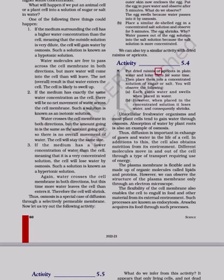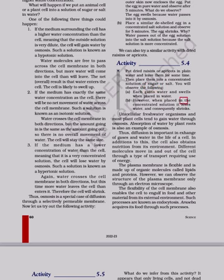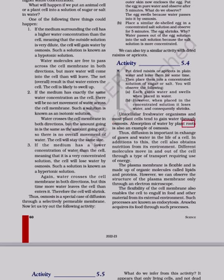Activity 5.4: Put dried raisins or apricots in plain water and leave them for some time, then place them into a concentrated solution of sugar or salt. Each gains water and swells when placed in water. However, when placed in the concentrated solution it loses water and consequently shrinks. Unicellular freshwater organisms and most plant cells tend to gain water through osmosis. Absorption of water by plant roots is also an example of osmosis.